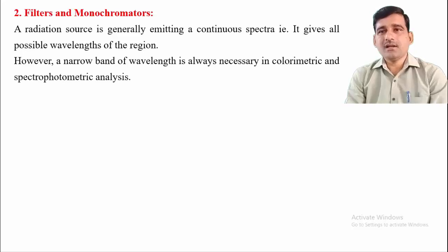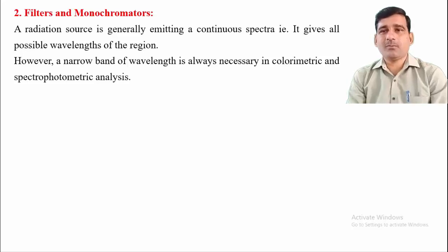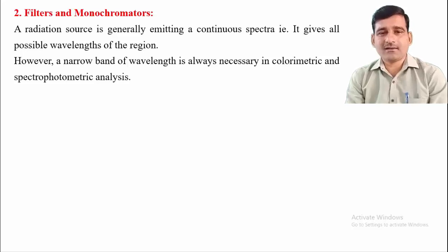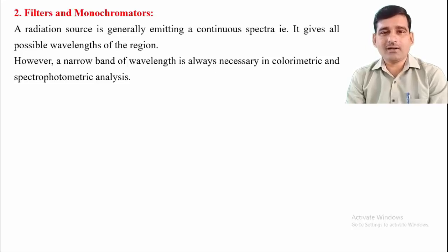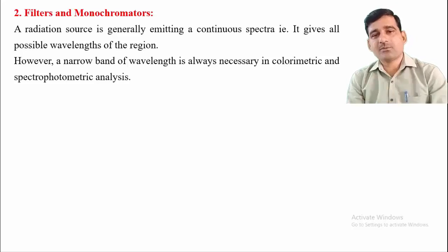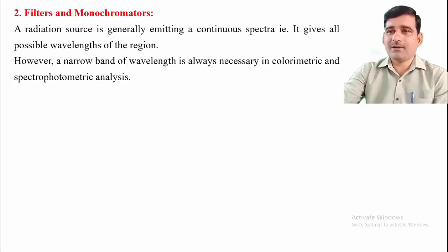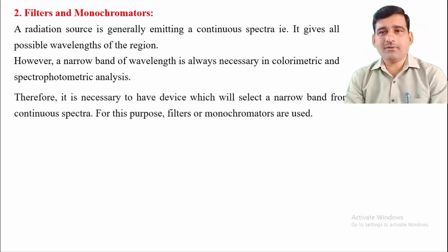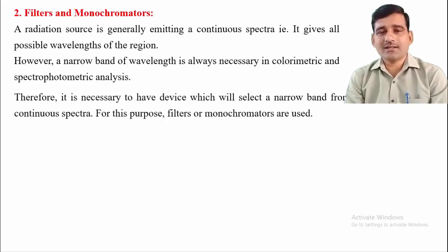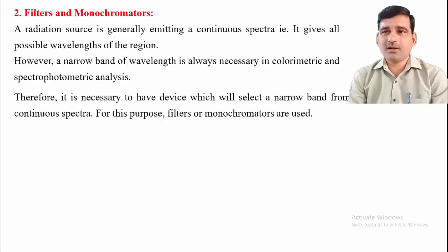A narrow band of wavelength is always necessary in colorimetry as well as spectrophotometric analysis. For example, if we require 580 nanometer wavelength, we use a narrow bandwidth of plus or minus 10 nanometer or sometimes plus or minus 25 nanometer. It is therefore necessary to have a device that selects a narrow band from the continuous spectrum, and for this purpose we require filters and monochromators.